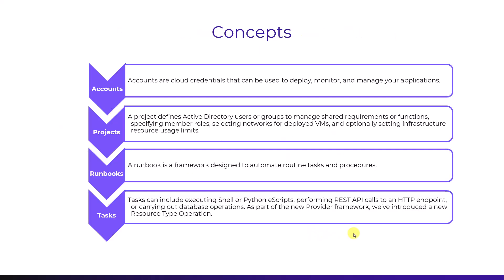Before we dive in, let's level set on some of the concepts. Accounts refer to cloud credentials that allow for deploying, monitoring, and managing applications within the platform. Projects organize users or groups — typically from Active Directory — around a shared purpose or function. Projects define member roles, designate specific networks for VM deployments, and can set limits on infrastructure resource usage, helping teams manage resources effectively.